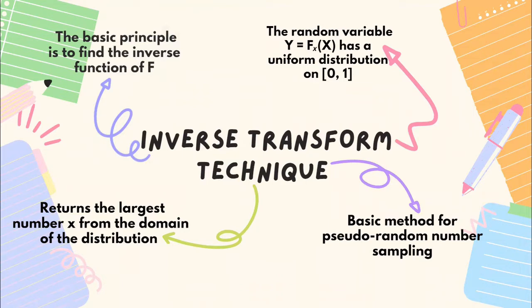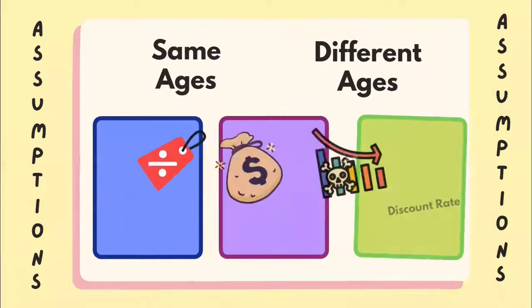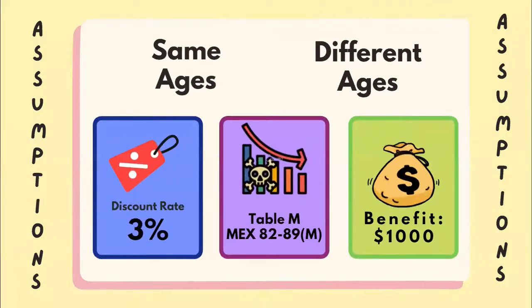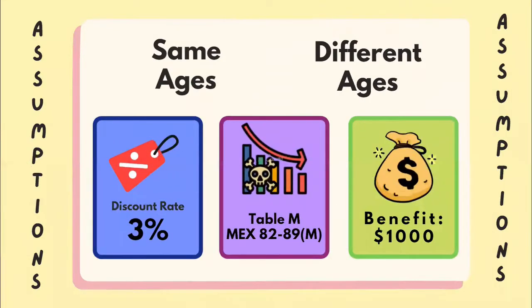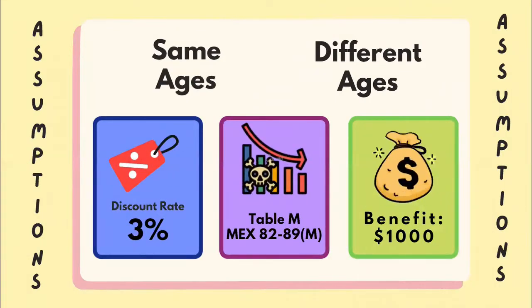Moreover, this returns the largest number x from the domain of the distribution. Now, for the assumptions, we have two cases: one with the same ages and the other one with different ages.